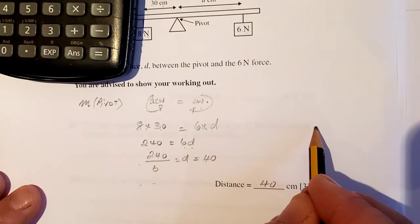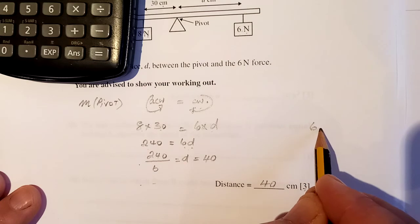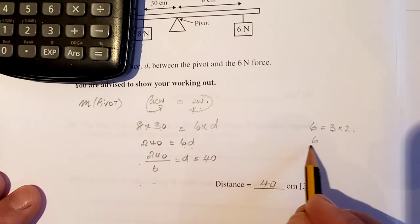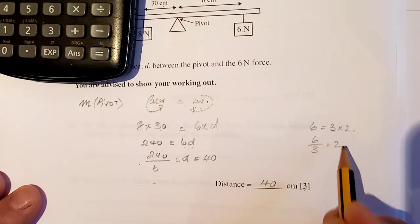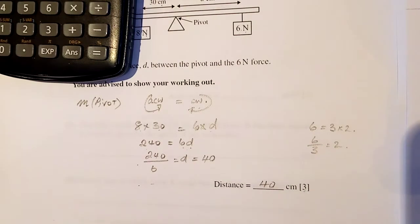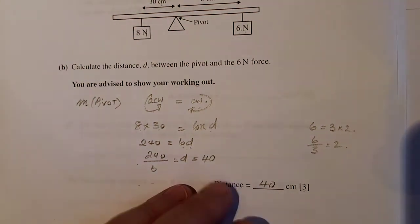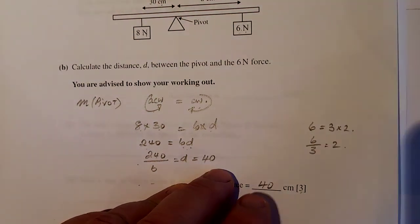240 over 6 is equal to D. Again, get the calculator out. 240 divided by 6. The answer should be 40, which it is. D is equal to 40. So three marks I'm looking for here. Let's have a look at the three marks. Three marks. Clockwise moments equals anti-clockwise moments. Force by distance is equal to force by distance. Remember, if you can't rearrange formulas, look. 6 is equal to 3 times 2. What do I want? 6 divided by 3 is equal to 2. Yes! So that's called exam technique if you're finding difficulty to rearrange them.